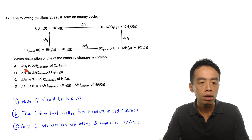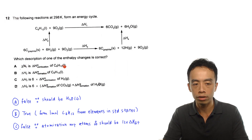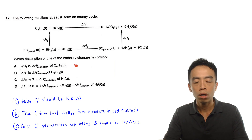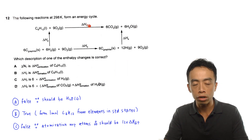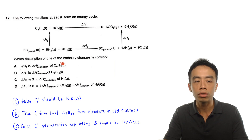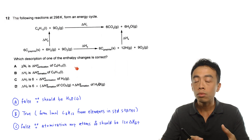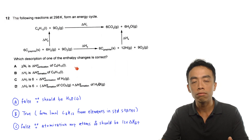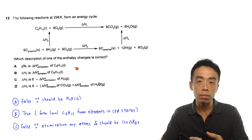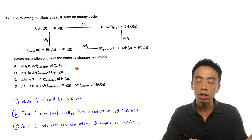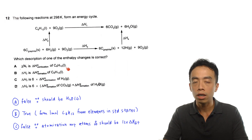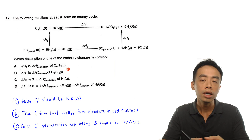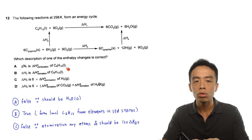Statement A: the enthalpy change for reaction number 1 is the enthalpy change of combustion of C6H12 liquid. We need to look at the first equation and see whether it is consistent with the enthalpy change of combustion of C6H12. We need to be familiar with the definition: enthalpy change of combustion is to burn one mole of substance in excess oxygen to give products, all under standard conditions.